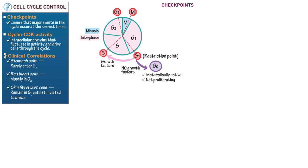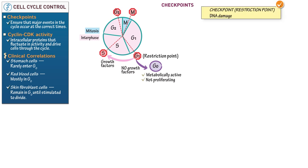Now let's return to the G1 checkpoint. Indicate that it is also a DNA damage checkpoint. If DNA is damaged at a DNA damage checkpoint, the cell cycle pauses for repair — an event known as cell cycle arrest — before entering the following phase, in this case the S phase.